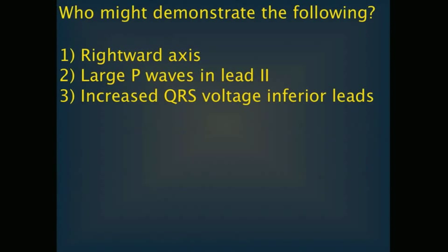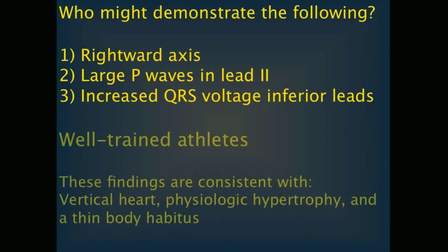Rightward axis, large P waves in lead 2, and increased QRS voltage in the inferior leads can be found in well-trained athletes. These findings are consistent with a vertical heart, physiologic hypertrophy, and a thin body habitus. In these hearts, the rightward shift tends to be rather subtle, with an axis less than 120 degrees.